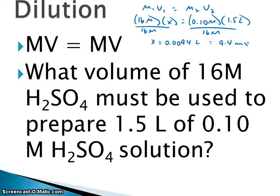So what that means is we would measure out 9.4 milliliters of 16 molar sulfuric acid added to a 1.5 liter volumetric flask, start to add water and as we add water the moles of solute doesn't change but the volume of solution changes so our solution becomes diluted. It gets smaller and smaller and once we dilute it down to 1.5 liters our new molarity will be 0.10 molar.